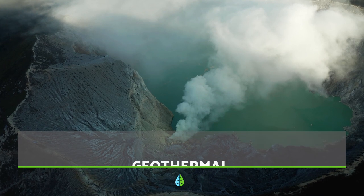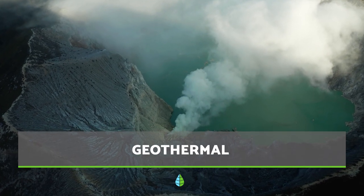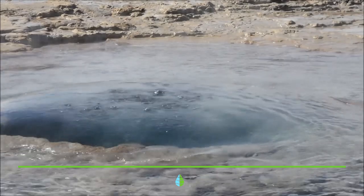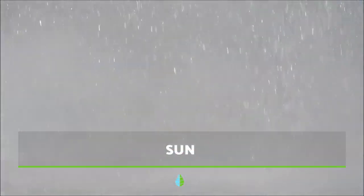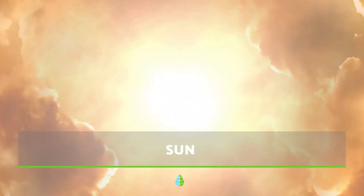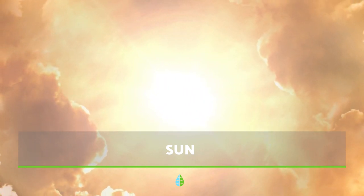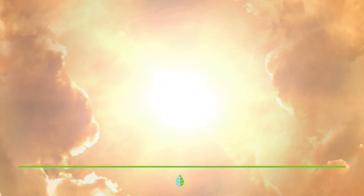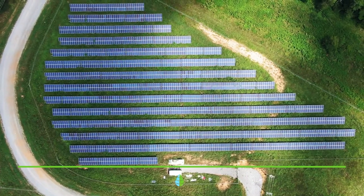Geothermal: this renewable resource comes from the internal heat of the Earth that originates in the core of the planet. The Sun: heat and electricity can be obtained from solar radiation thanks to the well-known solar panels that transform the sun's rays into energy.